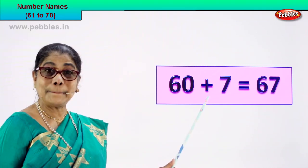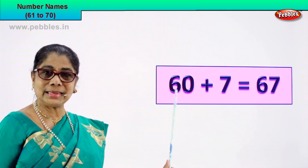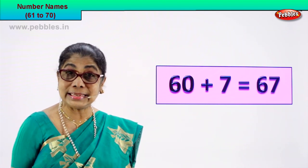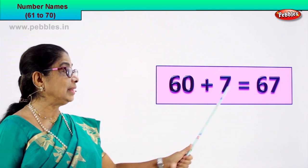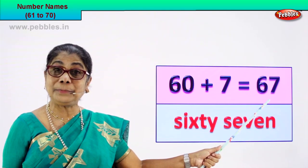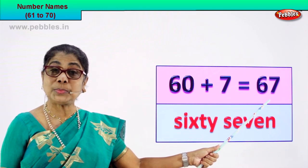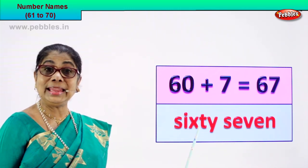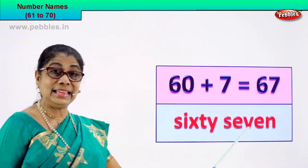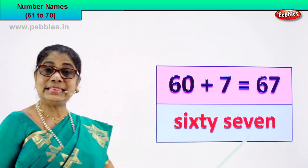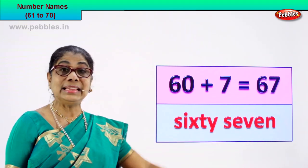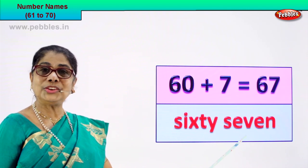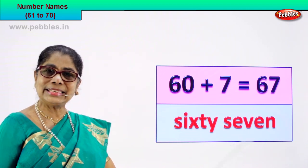Look! 60 plus 7 is equal to 67. 6 and 7, 67. 67 is the numeral. How do we write its name in spelling? You know the spelling of 60, you know the spelling of 7. S-I-X-T-Y, 60. S-E-V-E-N, 7. 67. The numeral is 6 and 7, 67, and its name is written in spelling here: sixty-seven. Did you enjoy? Very easy, isn't it?